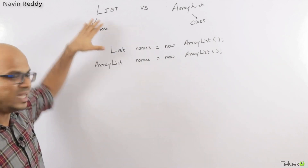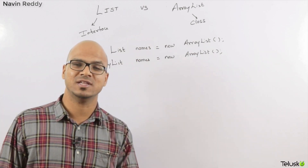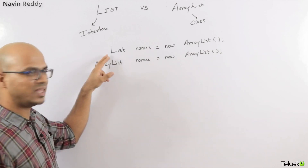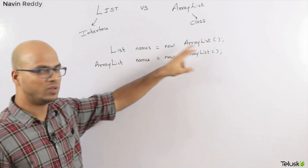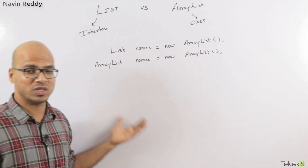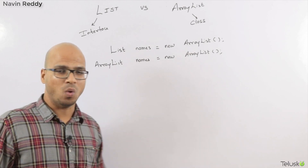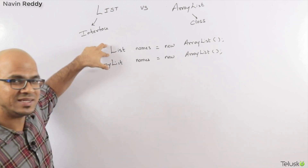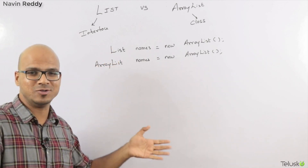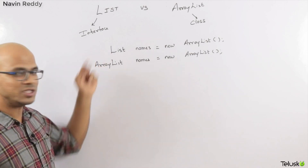List is an interface and ArrayList is a class, and ArrayList class implements the List interface. So whenever you create a list, we always do something like: List names = new List. People ask why we don't write ArrayList, because it works the same way. You can create a List or you can create an ArrayList — you can add values to both. Both are exactly the same. Then why do people refer to this one?